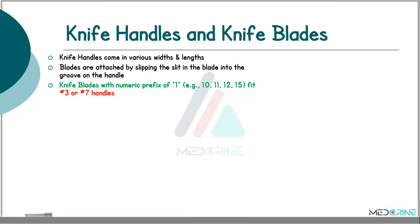Knife handles in surgery come in various widths and lengths. Surgical blades are attached to these knife handles by slipping the slit in the blade into the groove of the handle. Knife blades with a prefix of 1 — for example blade number 10, 11, 12 and 15 — fit into a number 3 or number 7 handle.